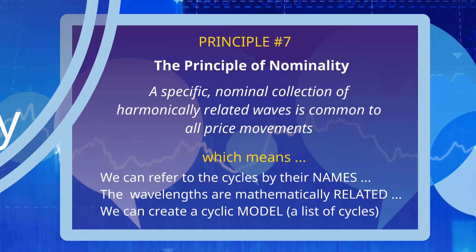They are not a totally arbitrary collection of cycles, but a specific collection of cycles. It also tells us that we can refer to the cycles by their names. That is the meaning of the word nominal, although there is some debate about the meaning of that word in that situation, but most analysts agree that it means that we can refer to the cycles by their names.